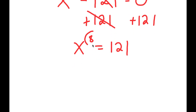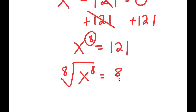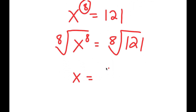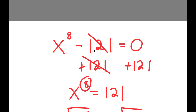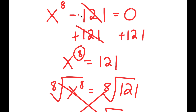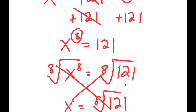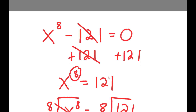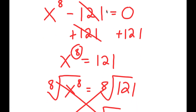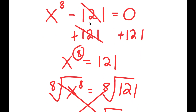And then since x is to the power of 8, take the 8th root on both sides to get an answer of the 8th root of 121. But this method is actually wrong, because there are actually many more solutions than just two to this equation. So we want to find all of these solutions.